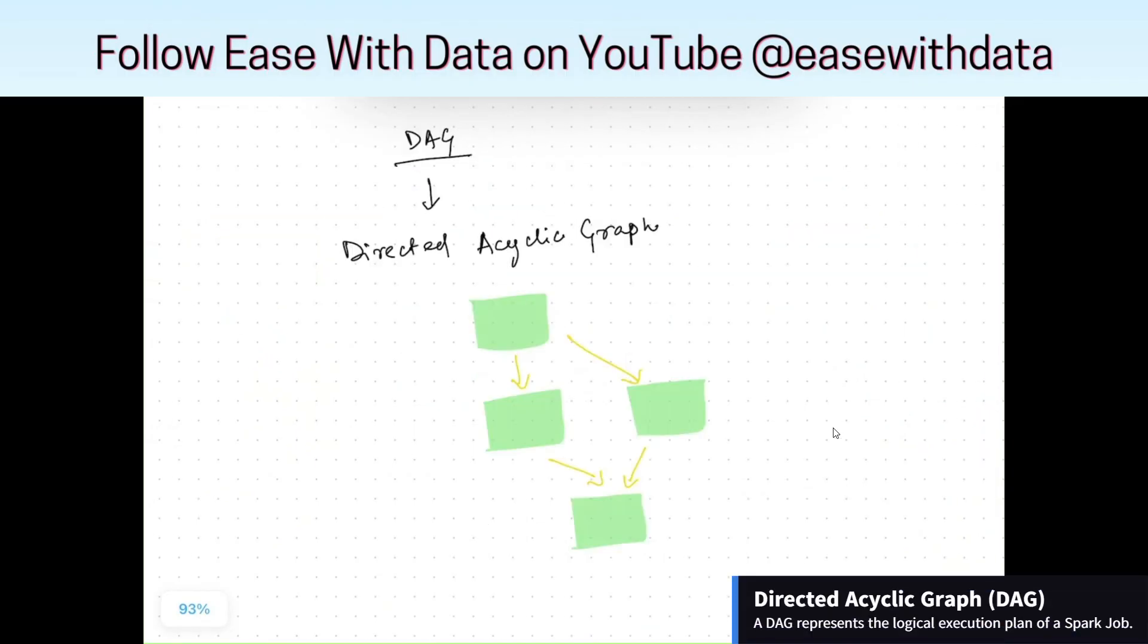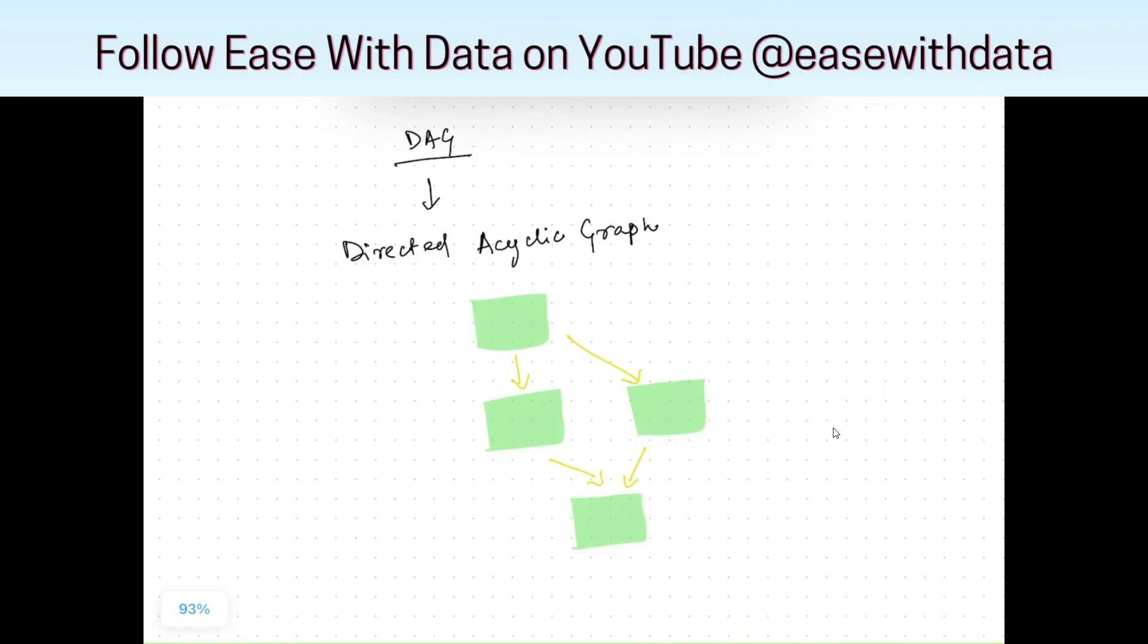The last thing pending is DAG. DAG is directed acyclic graph. As you can see on my screen, this is how a simple DAG looks like. We have arrow marks pointing to the next step and Spark uses DAG to resolve its execution plan.